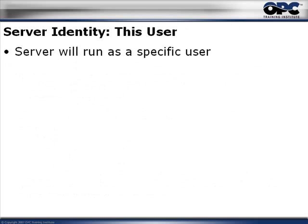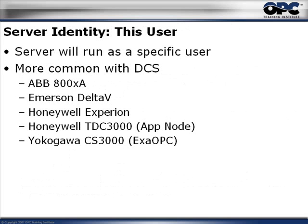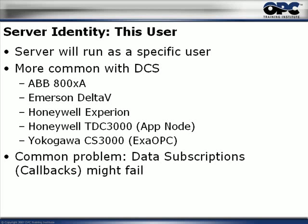The next server identity is 'this user,' and we often see it recommended by DCS vendors. In their case, the OPC server has to run as a very specific user because their data sources are tightly coupled to it — those data sources will only provide data to a specific user. If that user isn't the one requesting data, they refuse to provide it. So the server must run with a specific username and password. This isn't inherently bad; it's just how their security model works.